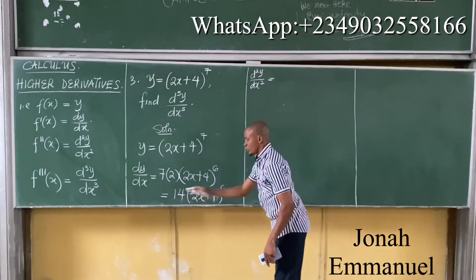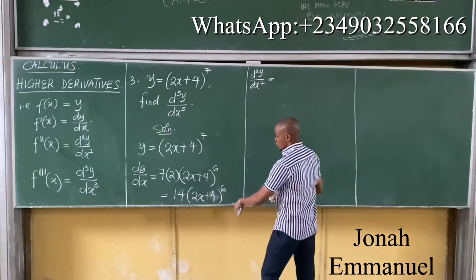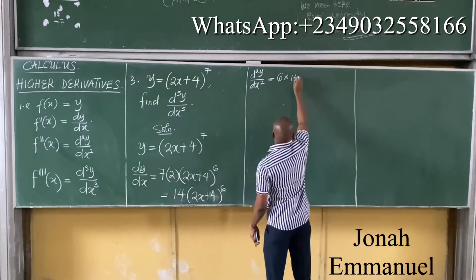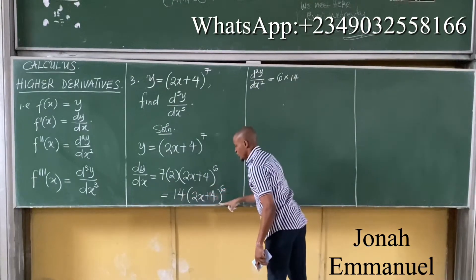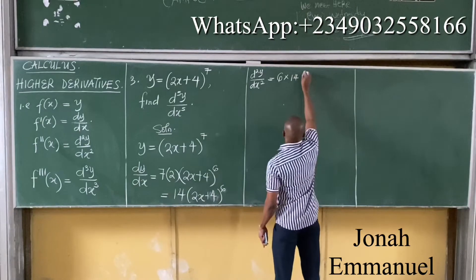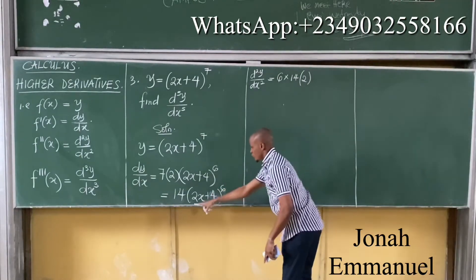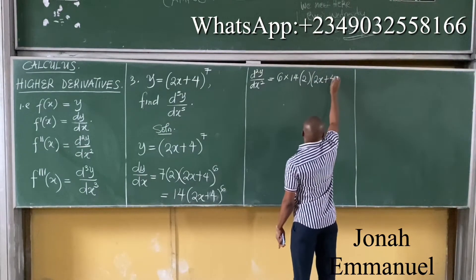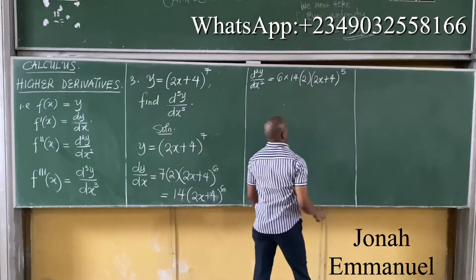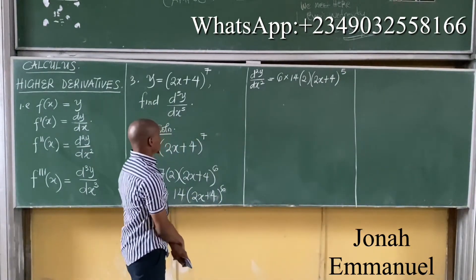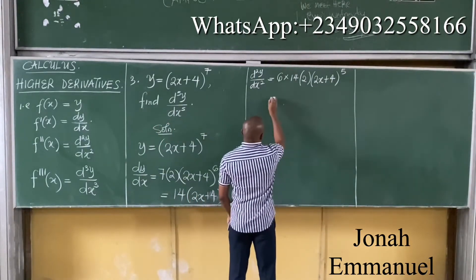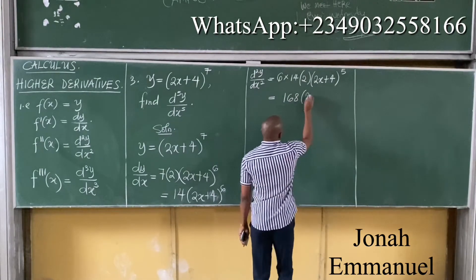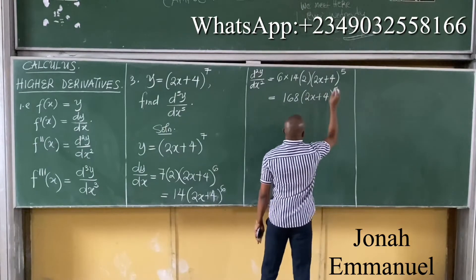Using the chain rule: bring down the power 7, multiply by the coefficient 2 from differentiating (2x+4), giving 7 times 2 times (2x+4)^6, which equals 14(2x+4)^6. For the second derivative, d²y/dx², write down the power 6, times 14, differentiate the inner function to get 2, repeat the bracket (2x+4), subtract 1 from the power to get 5. Multiplying gives 168(2x+4)^5.